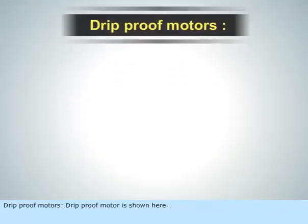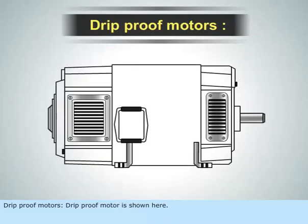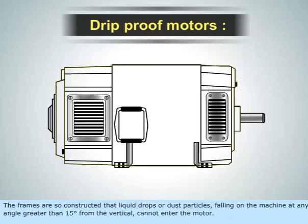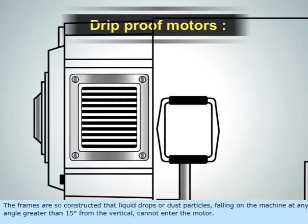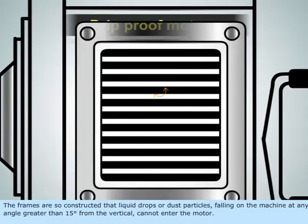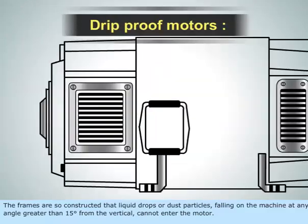Drip proof motor is shown here. The frames are so constructed that liquid drops or dust particles falling on the machine at any angle greater than 15 degrees from the vertical cannot enter the motor.